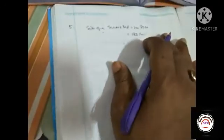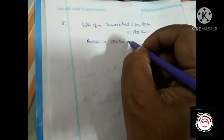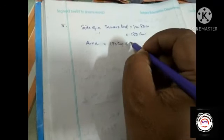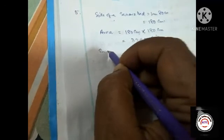Number 6: the side of a square bed is one meter 80 centimeter, that means 180 centimeter. The area is equal to 180 centimeter into 180 centimeter, which means 32400 centimeter square. Now the bed is to be enlarged by a strip.